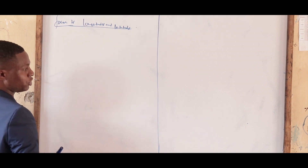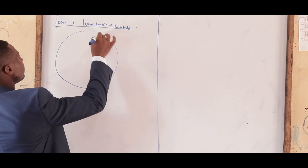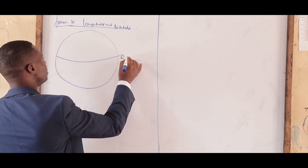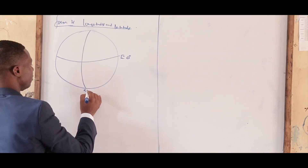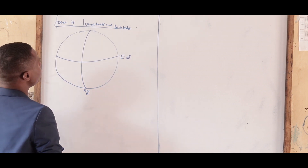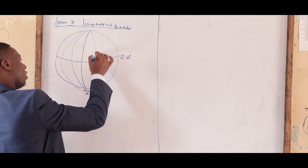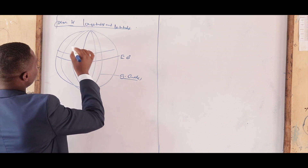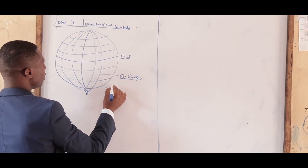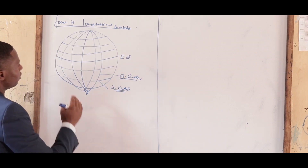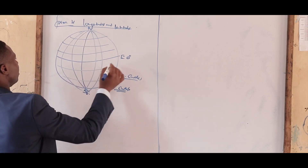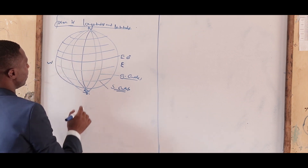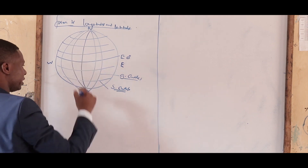We are looking at longitudes and latitudes. From geography, we have imaginary lines that run east to west and north to south. The central one is called the equator, which is zero degrees, and the other one is the Greenwich Meridian, which is also zero degrees. Longitudes are lines that run north to south — in mathematics you call them great circles. Lines that run east to west are called latitudes, or small circles.